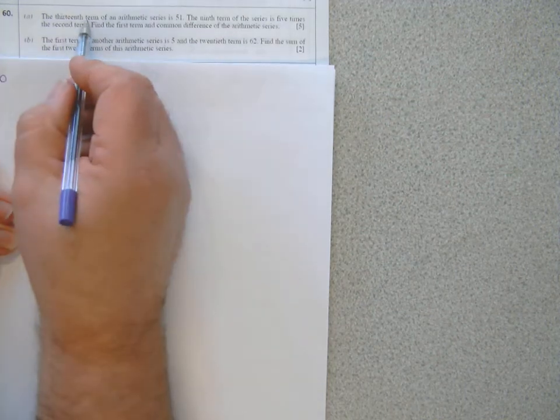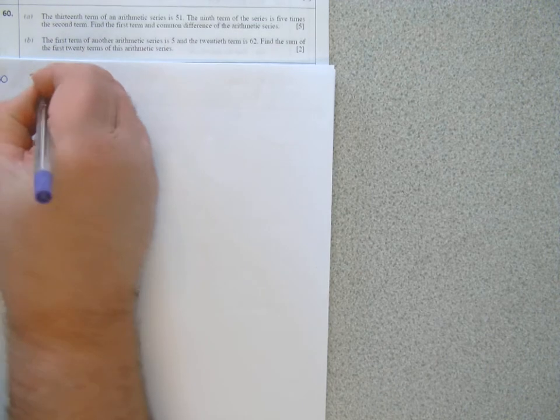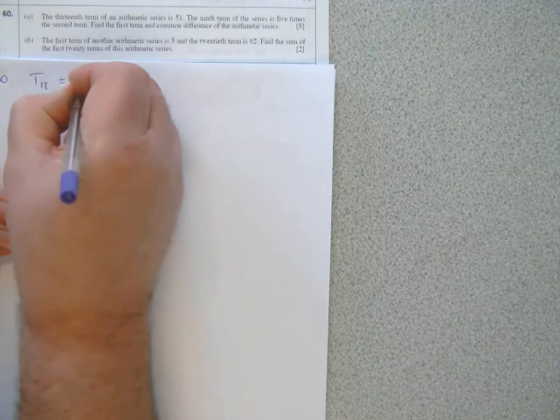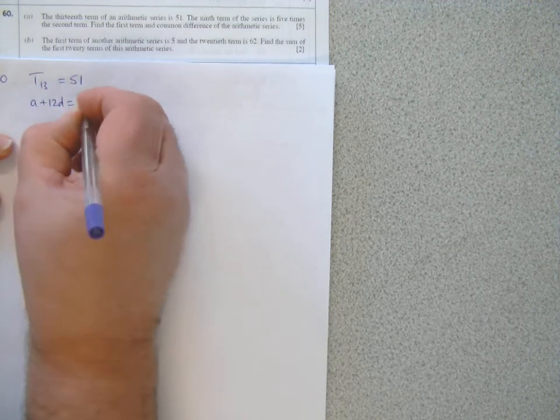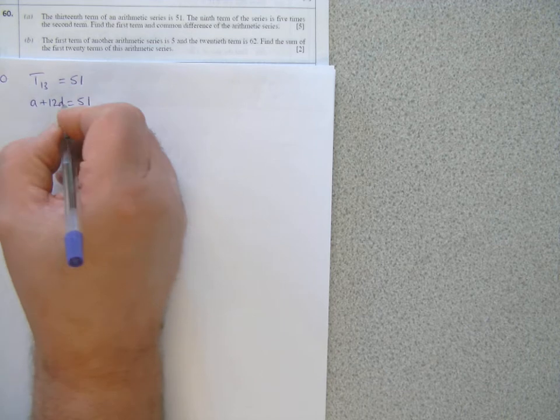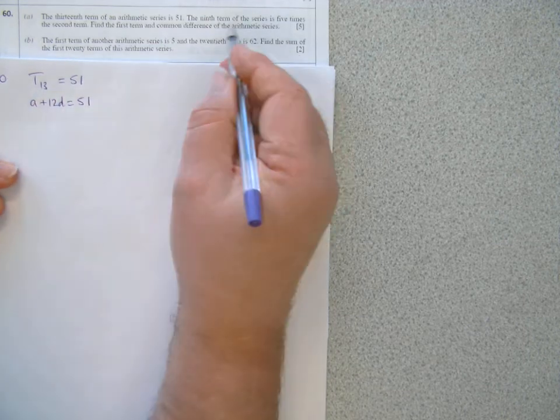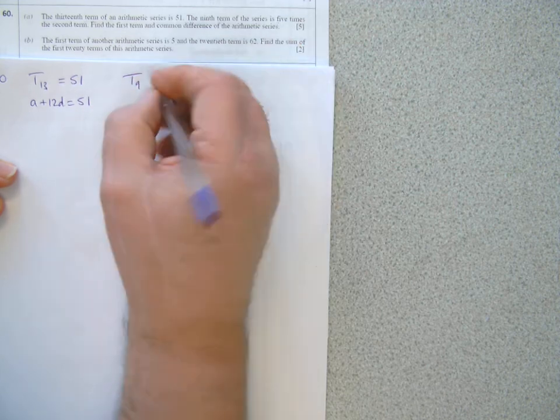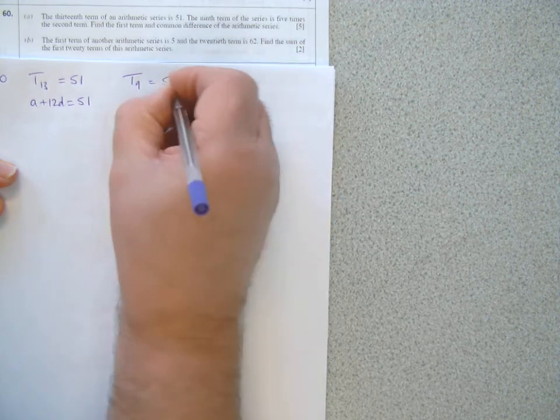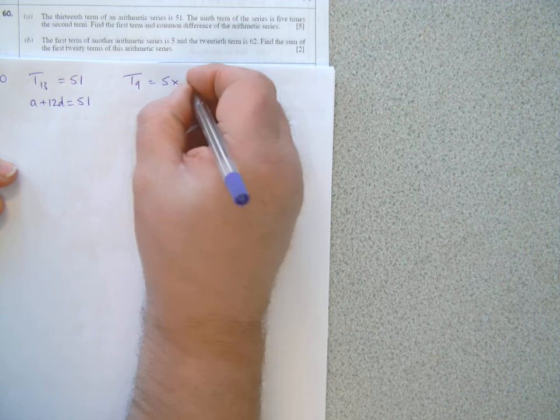So the 13th term is 51, so that's T13 is 51. T13 is A plus 12D equals 51, always one less D than the term number. The 9th term, T9, is 5 times, equals 5 times the second term T2.